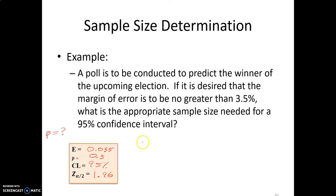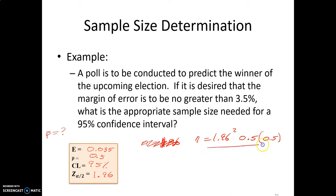We can now calculate the sample size. The formula is Z squared: 1.96 squared, times 0.5 times (1 minus 0.5), giving another 0.5, divided by the margin of error 0.035 — don't forget to square that margin of error. When we do the math, we get a sample size value of 784.